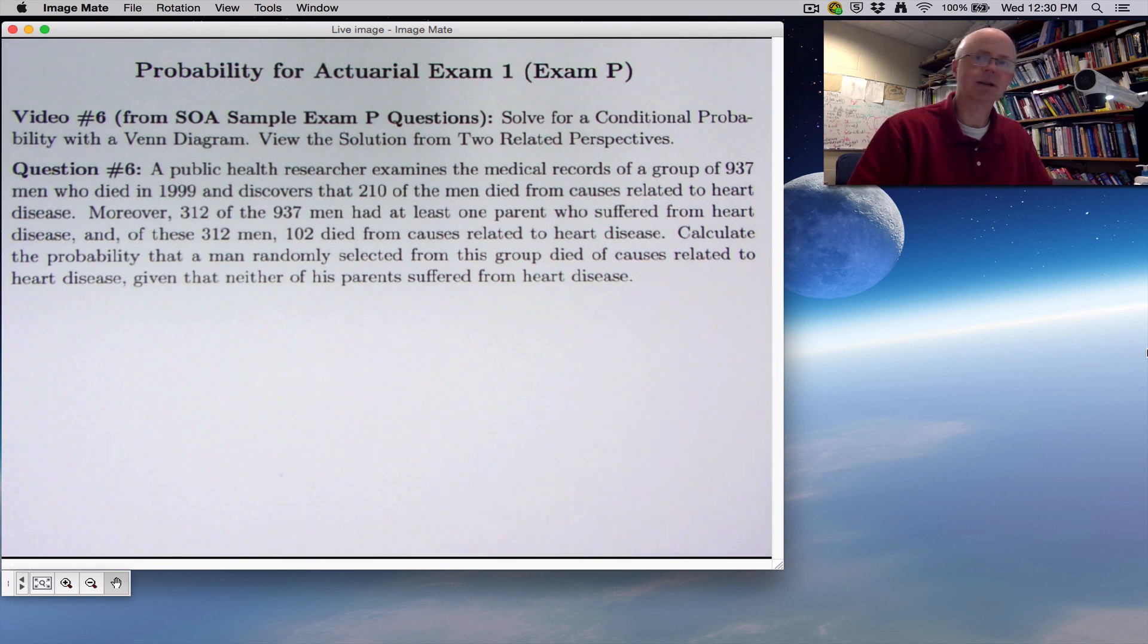In video five, I used conditional probability to help me solve for a regular probability, but here we're actually solving for a conditional probability with a Venn diagram again. I verbally viewed the conditional probability from two different perspectives in the last video, but here I want to be more explicit about writing down the relationship. I want to view the solution from two related perspectives, two different formulas that are related to each other.